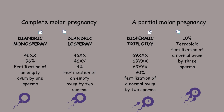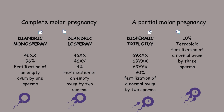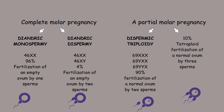Partial molar pregnancy is also divided into two forms. Dyspermic triploidy, observed in 90% of cases, describes the fertilisation of a normal ovum by two sperm cells. The other form is tetraploid fertilisation, occurring in only 10% of cases, where a normal ovum is fertilised by three sperm cells.